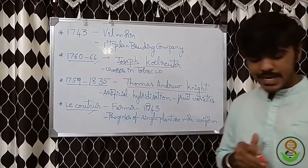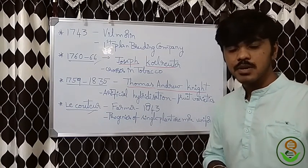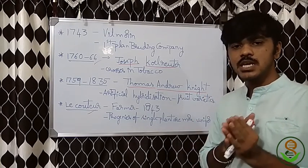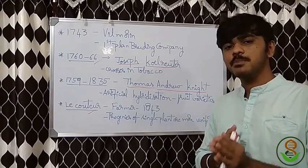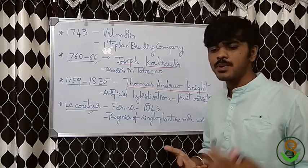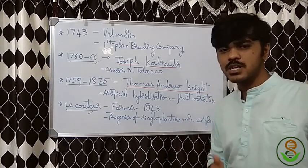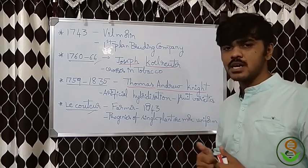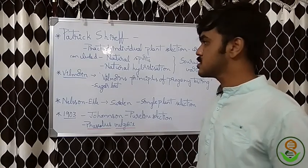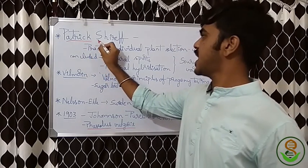There was also a person — a farmer — whose work was published in 1843. He said that progenies obtained from a single parent or single plant are more uniform. We know this is very common now, but at that time it was very important and gained the attention of many scientists.